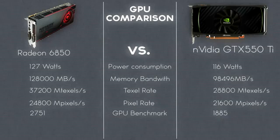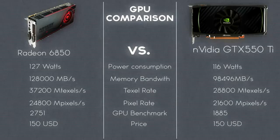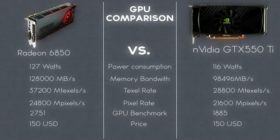The last category is price. The 6850 ranges at about $150, and the GTX 550 Ti also ranges at $150. In a nutshell, the HD Radeon 6850 is about 25% faster than the GTX 550 Ti.